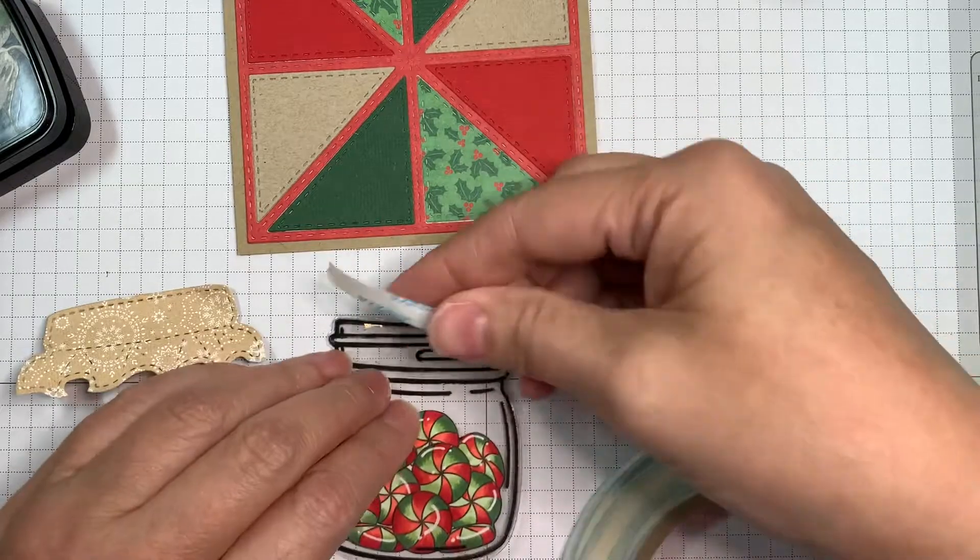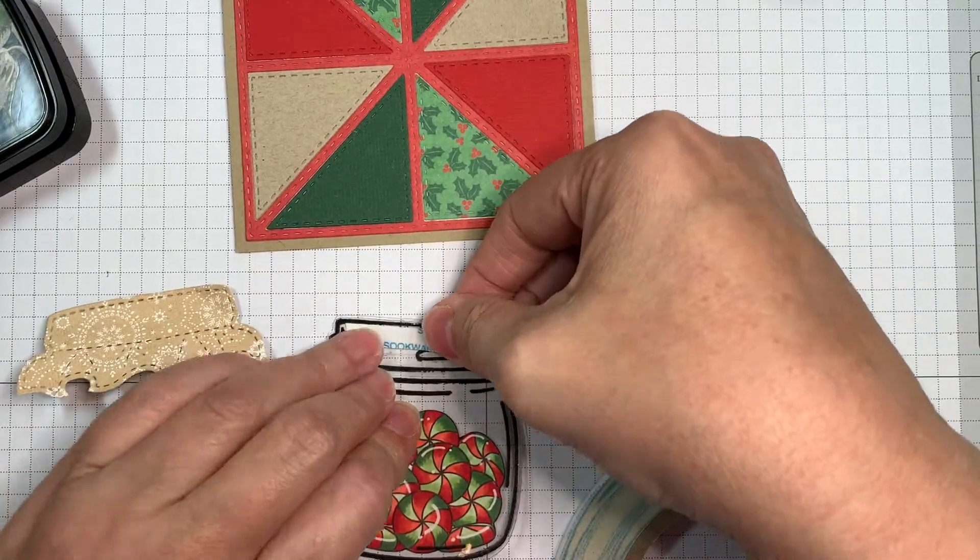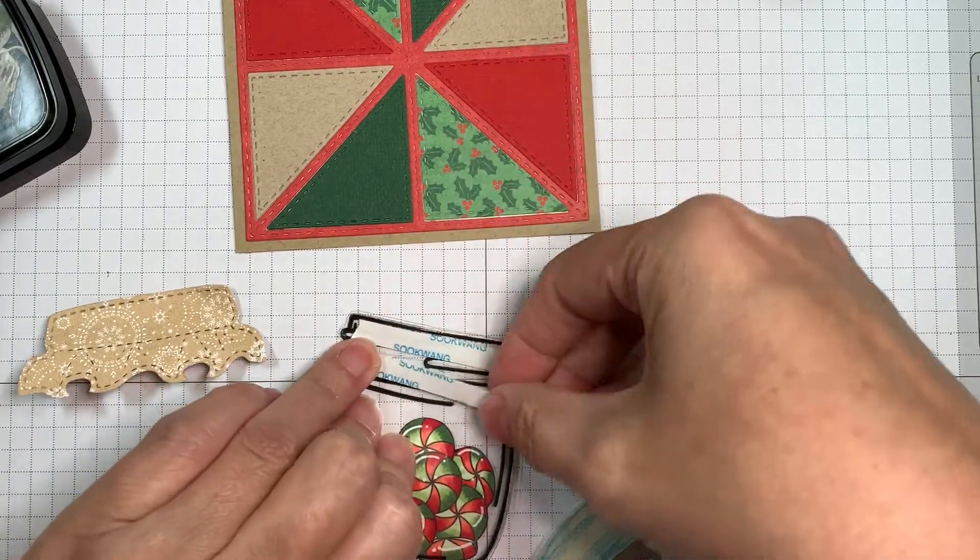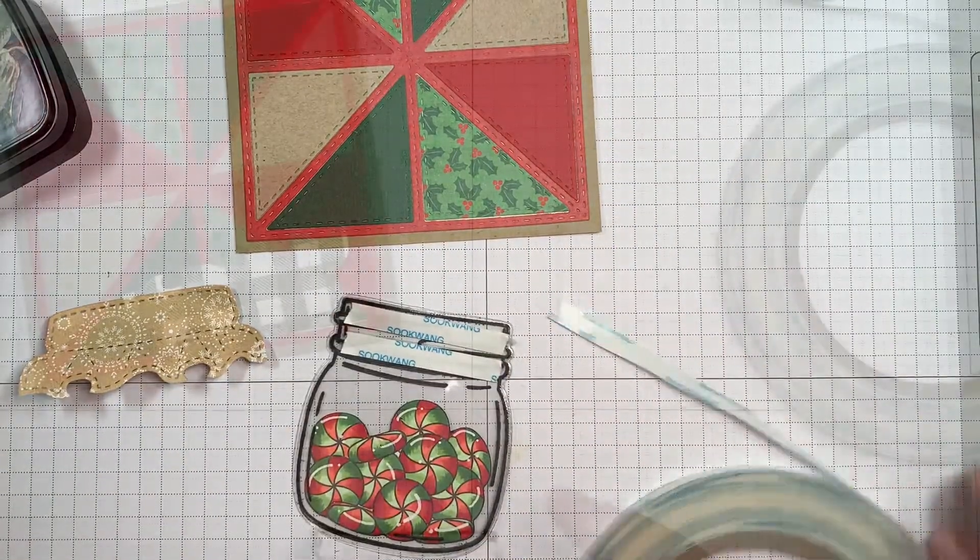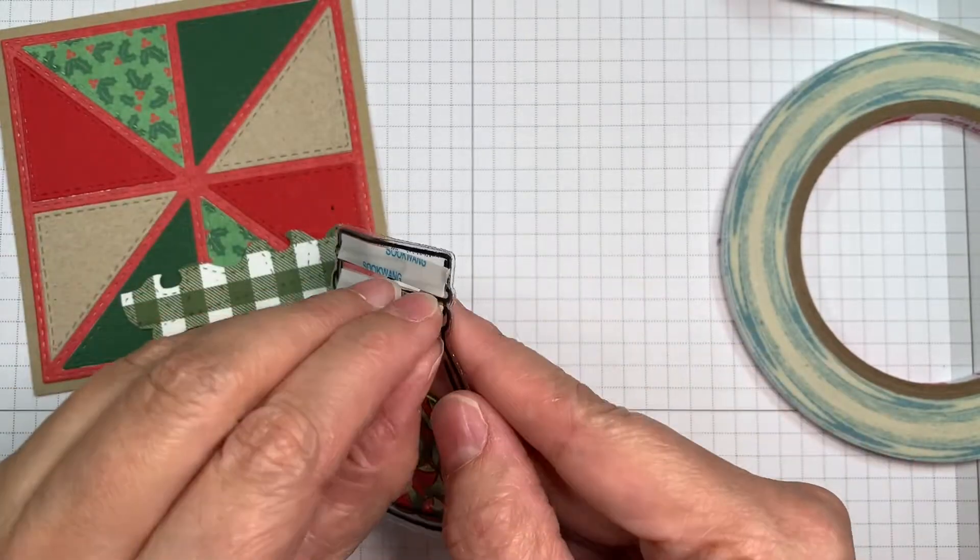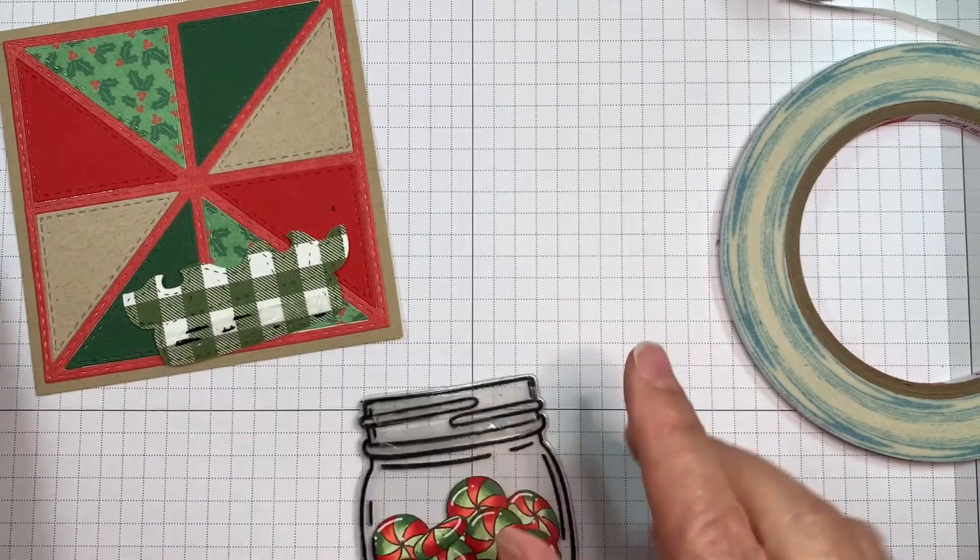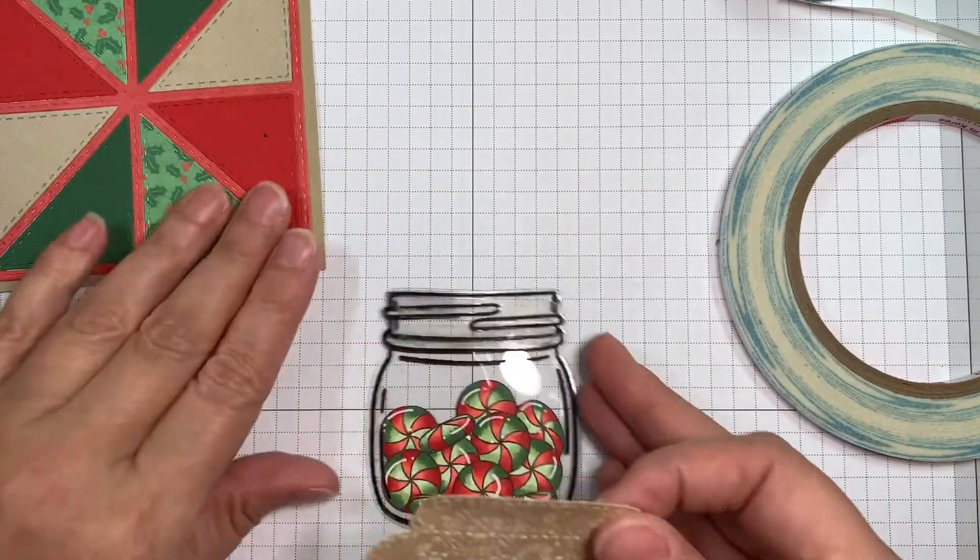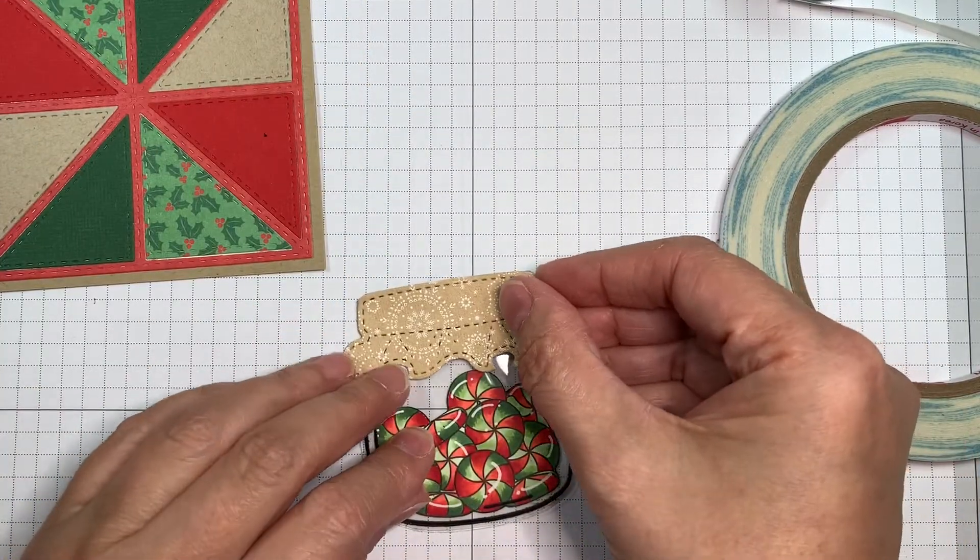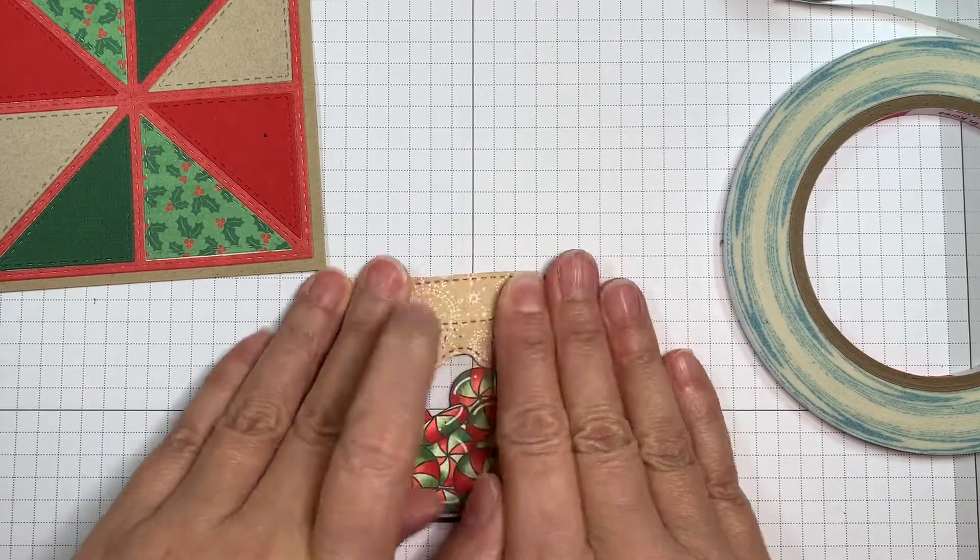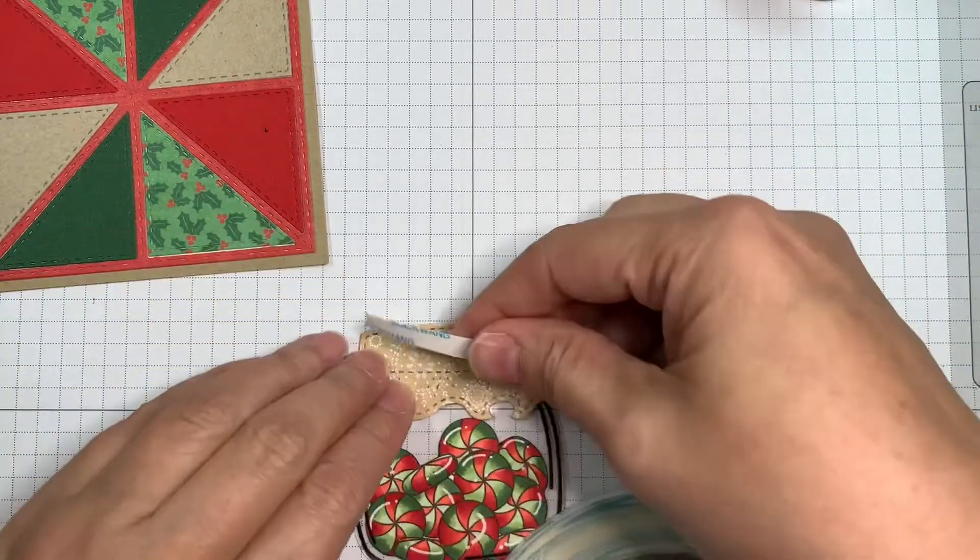And then I'm going to add the little fabric topper. That fabric topper is from the mason jar die set. And that pattern is actually from the My Favorite Christmas pad. But like I said, you could use any pattern pads that you have to make cards like this. I just chose colors and stuff that went together. And I chose my Copics related to what I was going to be using.